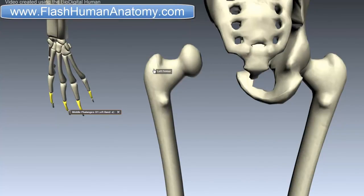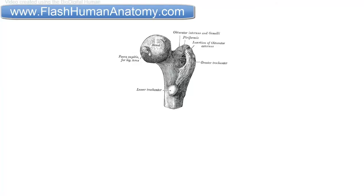The trochanteric fossa is not clearly visible on this model, but I will show you on another image. Here you should be able to see the inter-trochanteric crest. I prepared an image for you — here is the trochanteric fossa, the greater trochanter, and the lesser trochanter. They are connected with the inter-trochanteric crest, this crest here between the two trochanters.